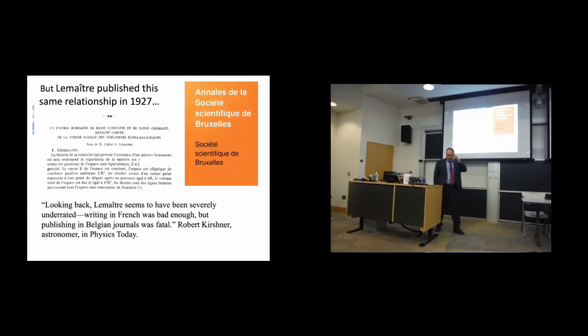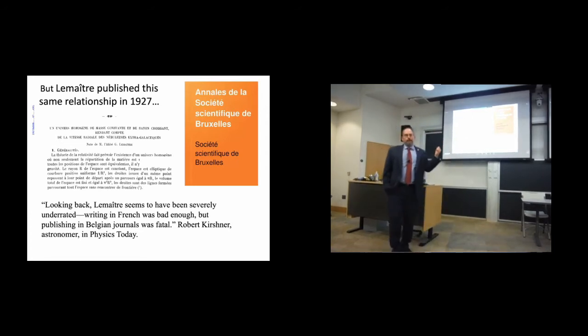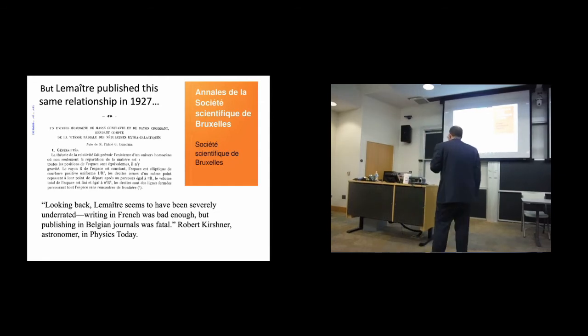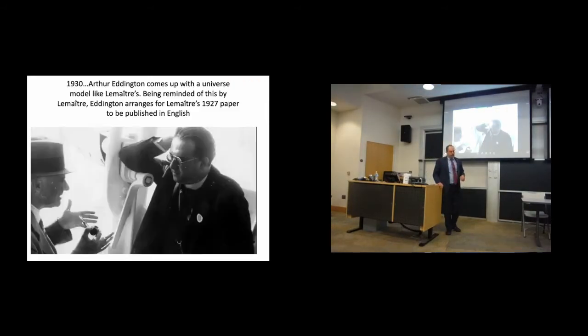The problem, though, is that this paper, unlike Hubble's, which was in English in a very famous English-language journal, this was published in French in a Belgian journal, the Annals of the Scientific Society of Brussels. How many people have heard of this society? That was the problem. And because there was no internet at that time, people got their journals in a brown paper wrapper shipped across the Atlantic or the Pacific. People didn't read this. And this paper was basically ignored.